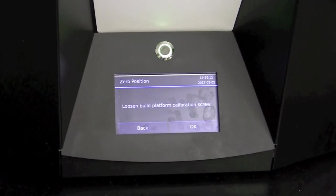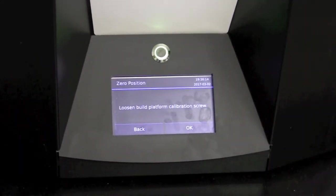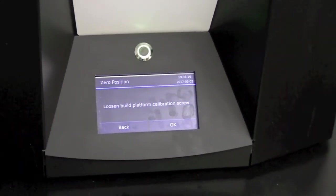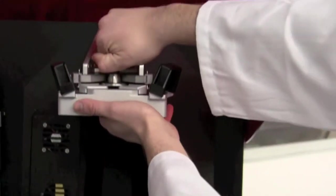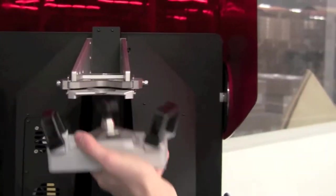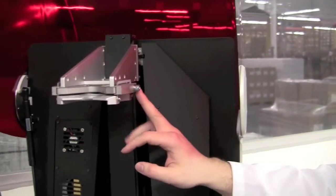At this point in time, it's going to prompt us to loosen the build platform calibration screw. The calibration screw is located on the right side of the build head. This can be seen easily by removing the build plate. It's located right here.